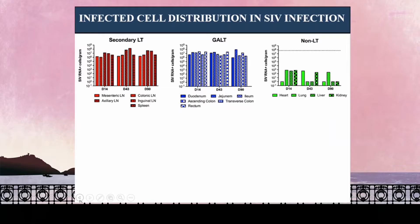What we found is that there can be up to a sixth order of magnitude lower abundance of productively infected cells in non-lymphoid tissues compared to lymphoid tissues throughout the body. The second thing to appreciate is the relative stability of this virus over time — even at this early acute time point, we see an abundance of productively infected cells that is really maintained throughout all courses of disease in these lymphoid tissues.